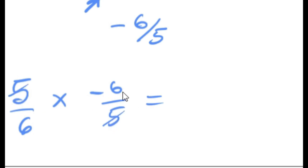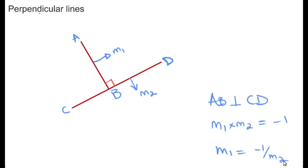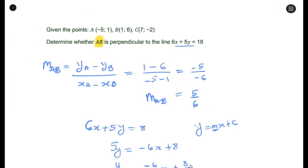Taking the two gradients — 5/6 and −6/5 — we multiply them together. The 6s and 5s cancel, giving us −1. Since the product is −1, we can confirm that AB and the given line are indeed perpendicular.